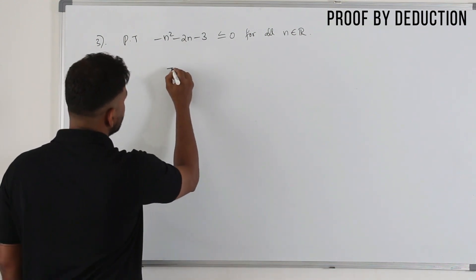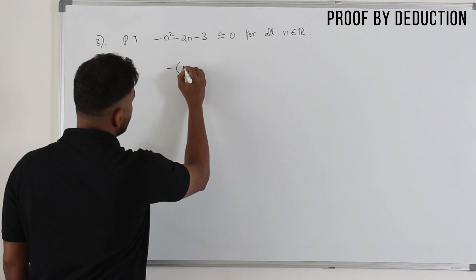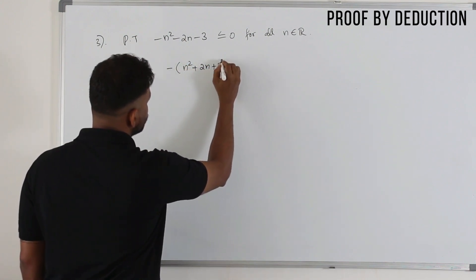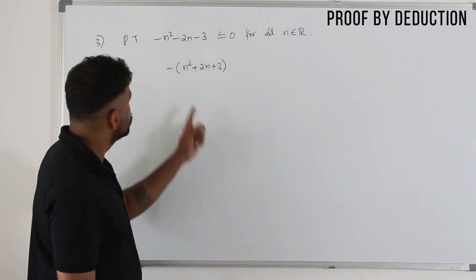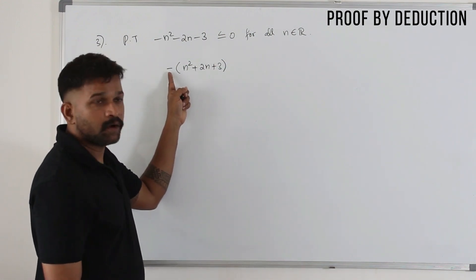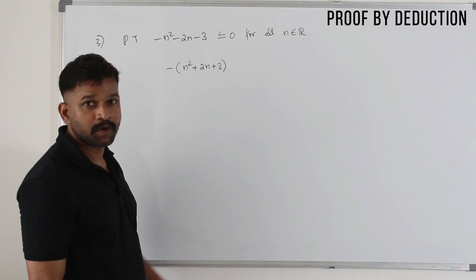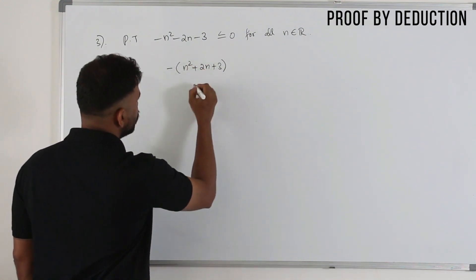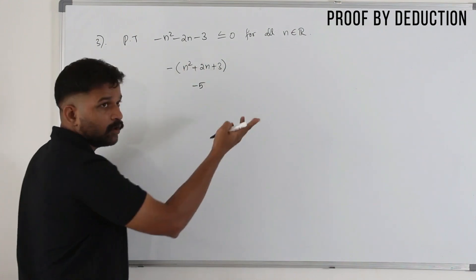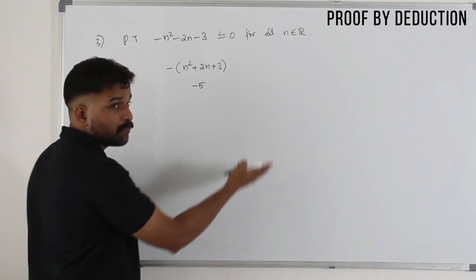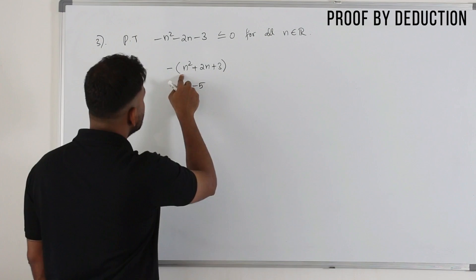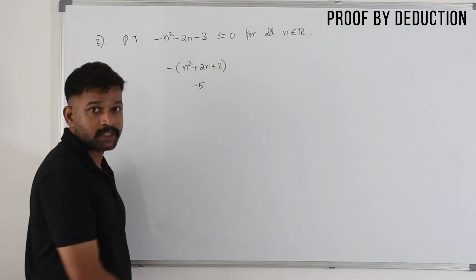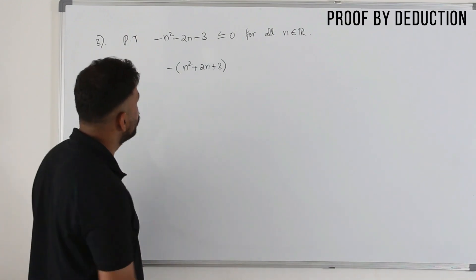Start from the expression. Take minus as a common factor of minus n squared plus 2n plus 3. Just because you have a negative sign outside, you cannot say this is always negative. What if this expression equals minus 5 for some value of n? Then minus times minus 5 is a positive number. So you cannot conclude it's always negative just from the negative sign outside.